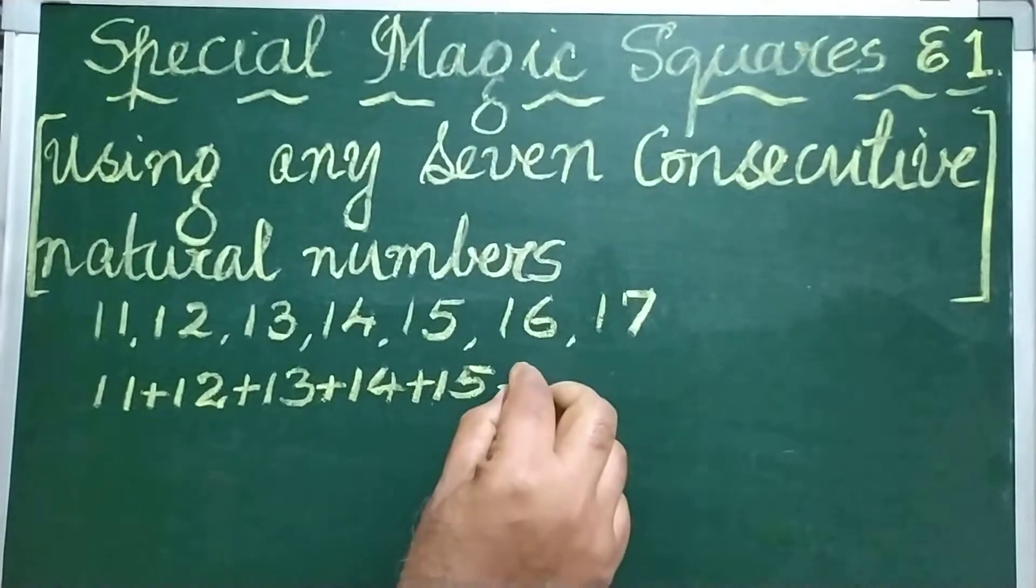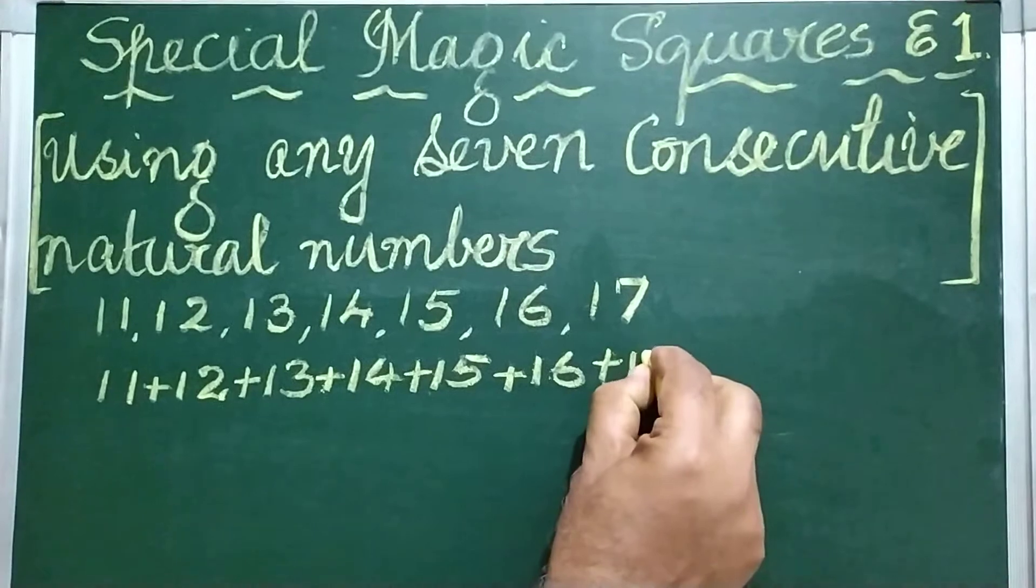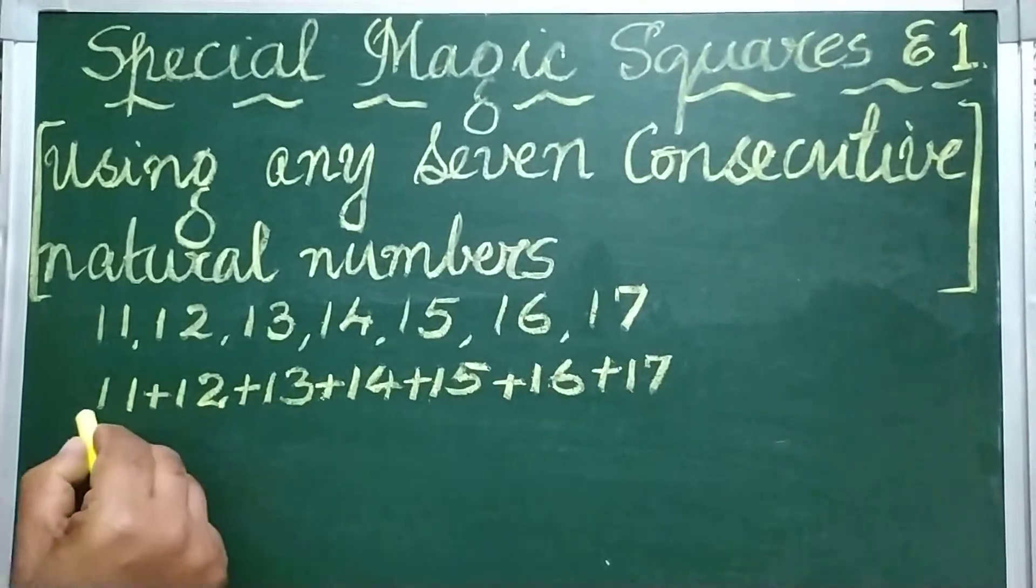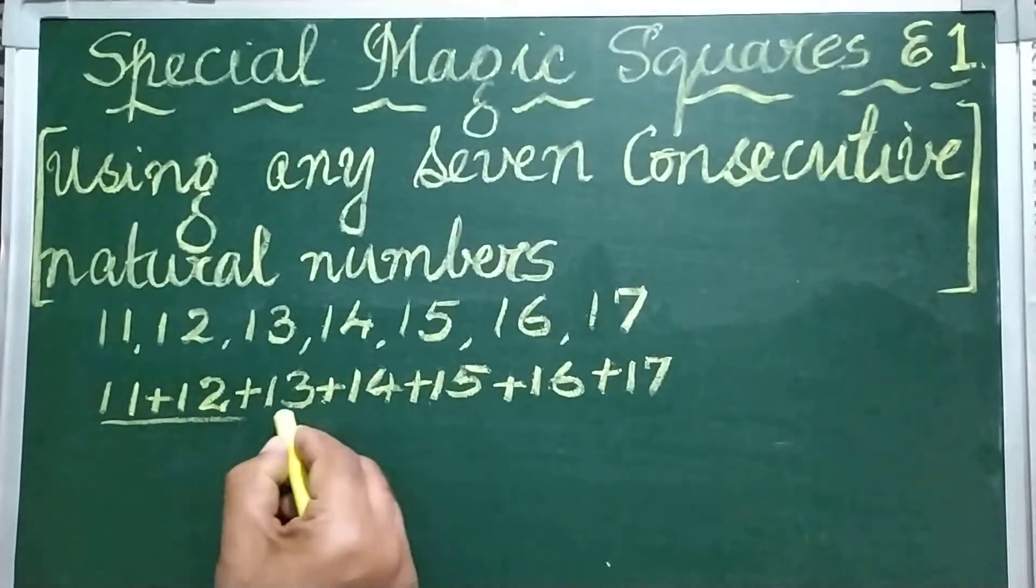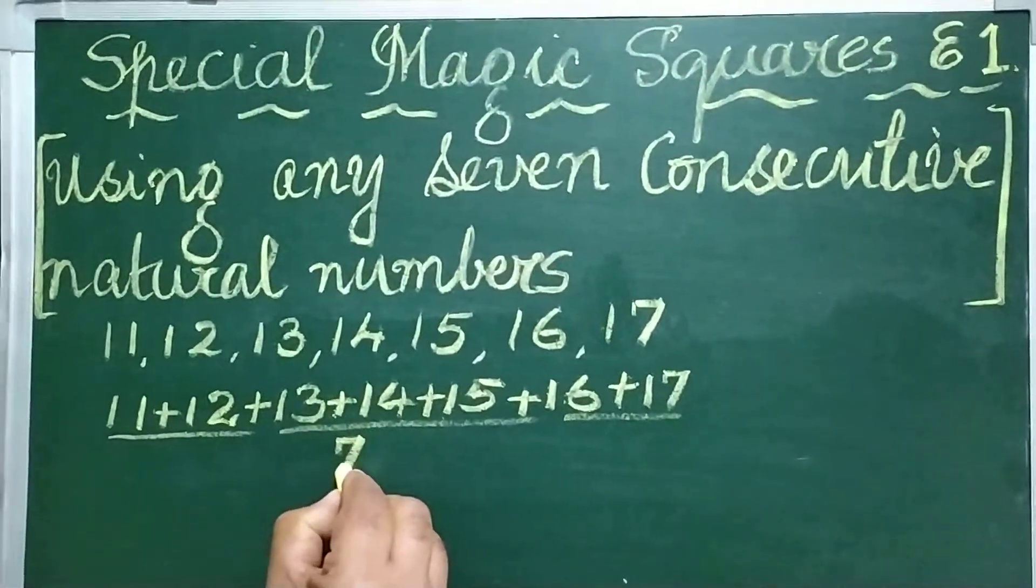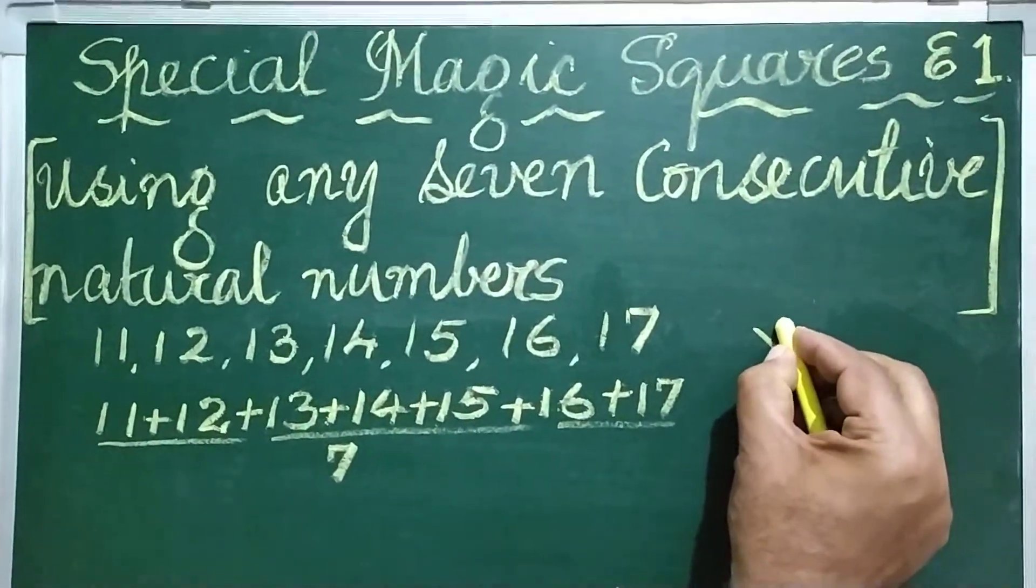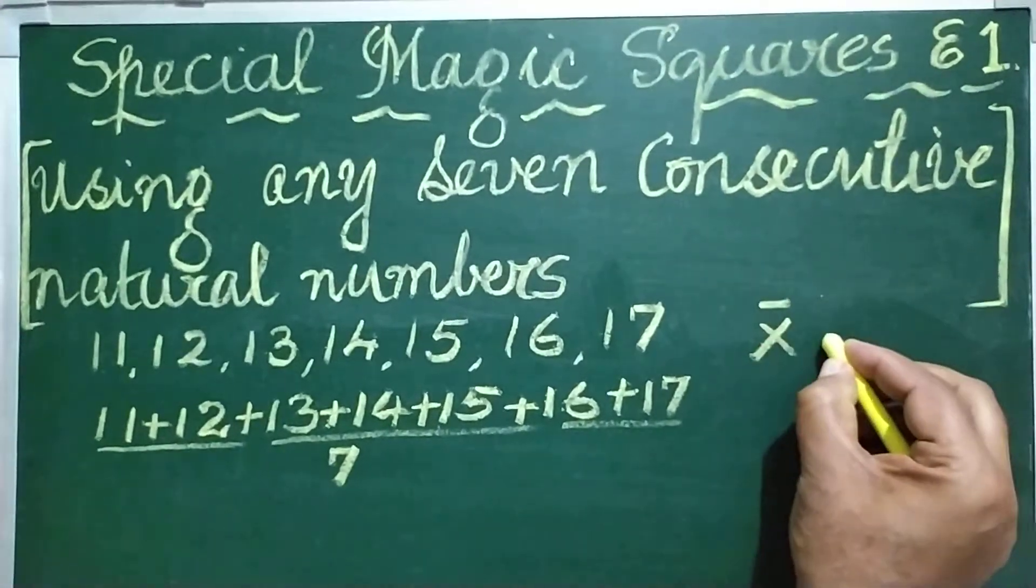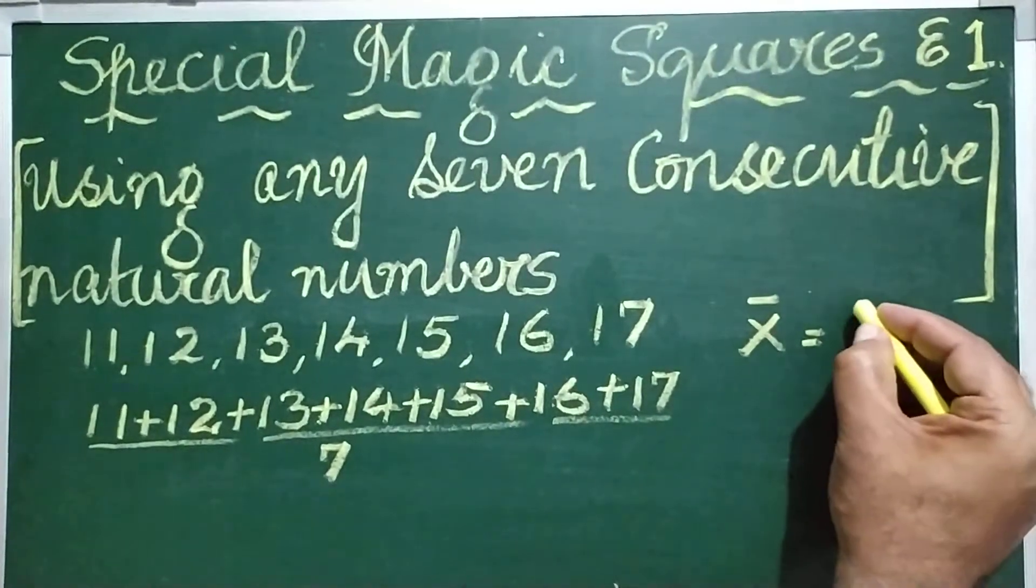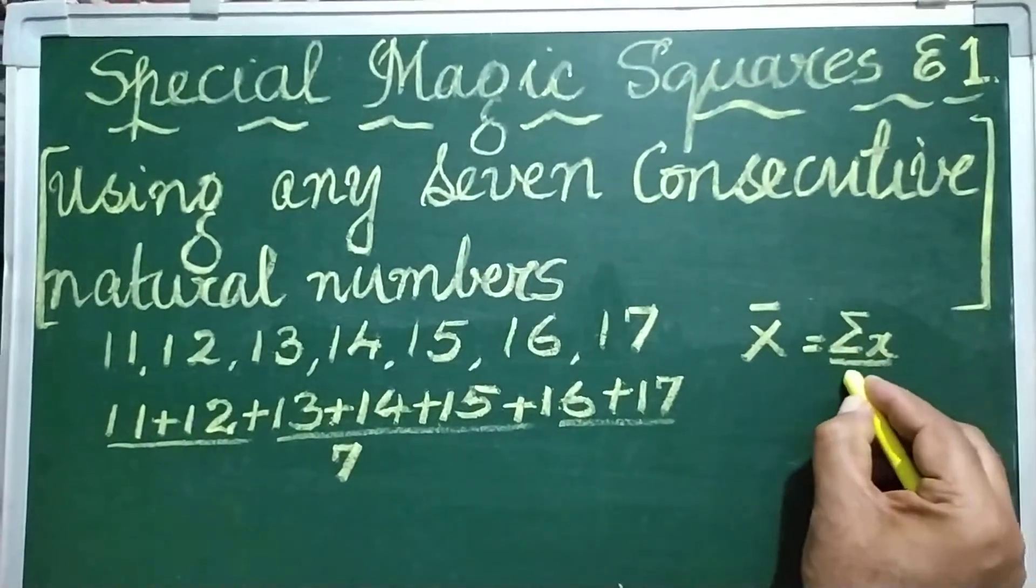And how do we get the average, or the other terminology that we use, is arithmetic mean. It is obtained by adding all the 7 natural numbers and dividing the sum by 7. If you remember, the formula to calculate the arithmetic mean, which is denoted by x̄, is given by Σx divided by n.